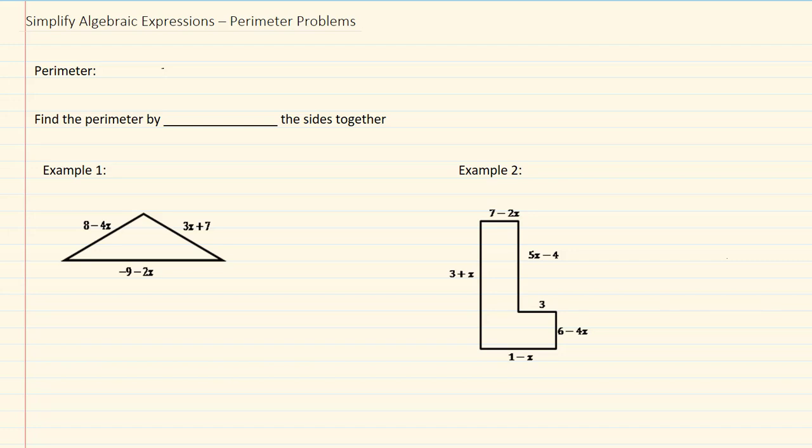Simplify algebraic expressions, perimeter problems. Perimeter, that is the distance around an object. We find the perimeter by adding the sides together.